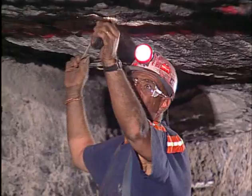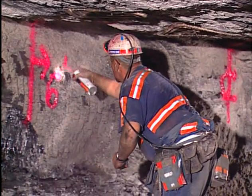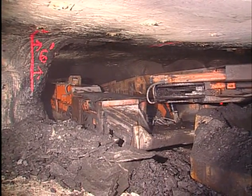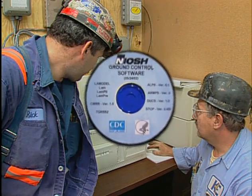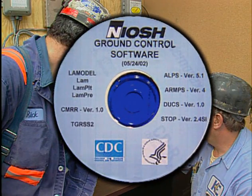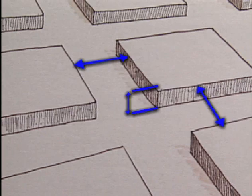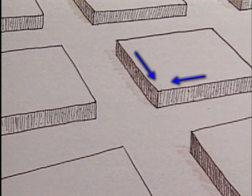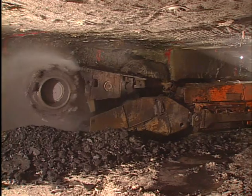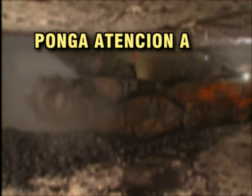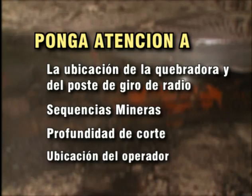El máximo de entrada y sangría de corte especificados en su plan de control de techo se basa en las condiciones de su mina. Para los operadores mineros frecuentes, es vital para su seguridad el mantenerse dentro de estas sangrías máximas. Si se sobrepasa este máximo de anchura, deberá instalarse soporte adicional. Hay muchos programas disponibles para diseñar pilares clasificados adecuadamente, que explican factores como entrada y corte transversal, anchura y altura, sobrecarga, dureza del carbón, ángulos de corte y dimensiones de los pilares. Sigan siempre el plan de control de techo y pilares, prestando atención a ubicación de la quebradora y del poste de giro de radio, secuencias mineras, profundidad de corte y ubicación del operador.